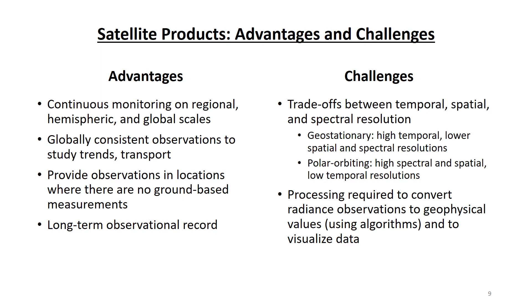But if you are going to be working with satellite products, you must keep in mind their limitations, including trade-offs between temporal, spatial, and spectral resolution — you can rarely get everything you want from one instrument. Geostationary satellites have high temporal resolution but lower spatial and spectral resolutions, making them more suitable for operational applications. In contrast, polar orbiting satellites have high spectral and spatial resolutions but lower temporal resolution, making them more suitable for research applications.